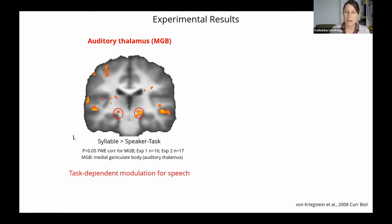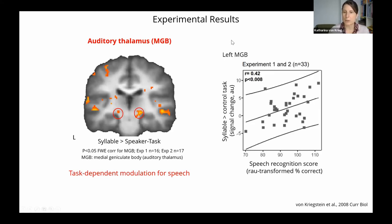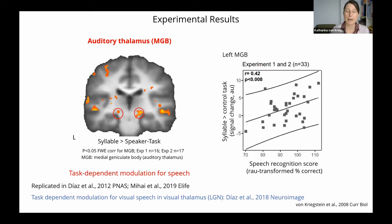I will call this task-dependent modulation for speech in the following. This task-dependent modulation for speech, which I plot here, is related to the speech recognition scores across subjects. So the better the people are in recognizing auditory speech, the higher is the task-dependent modulation in the left medial geniculate body. This has been replicated by several experiments, and we also find similar modulation for visual speech recognition in the visual thalamus, the LGN.